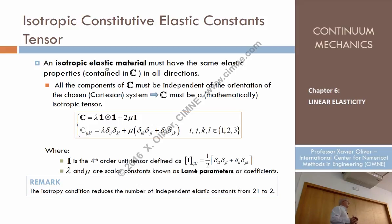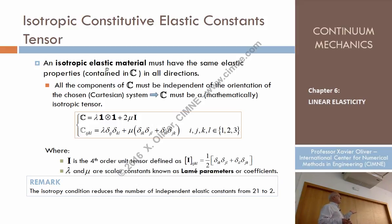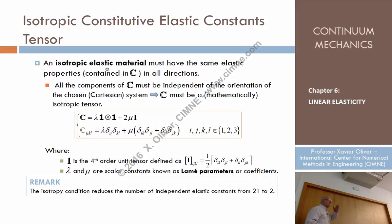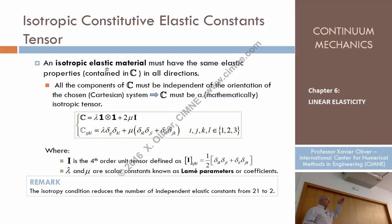Some property is said to be orthotropic if this property can be quantified in different directions, but can be obtained just by knowing the properties in two orthogonal directions. So isotropy means the property is the same whatever direction we look, while in the orthotropic case the property typically depends on two directions.